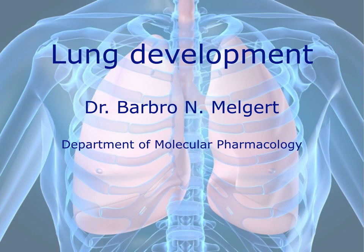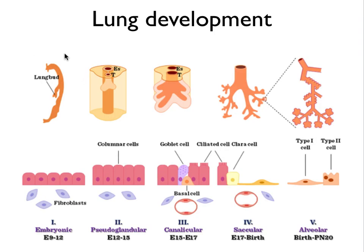We talked about macroscopic and microscopic features of the lung, but how do we get these lungs? This is shown here for mice. How the lung develops during the pregnancy of three weeks. A mouse pregnancy takes around three weeks and the number of days is displayed here. The lung actually develops from the gut. Around day nine to twelve, a lung bud sprouts from the gut and slowly develops into the lung.